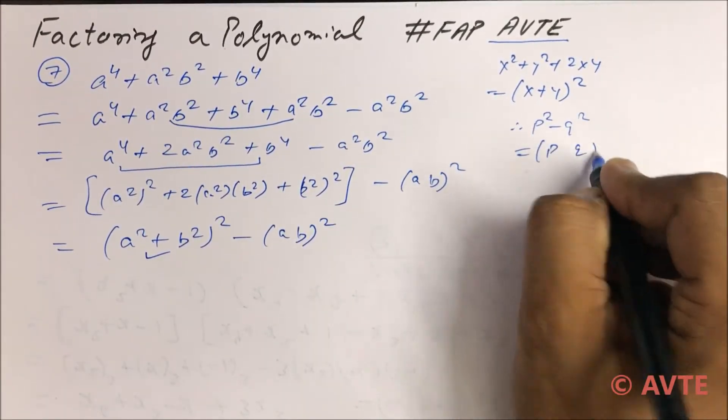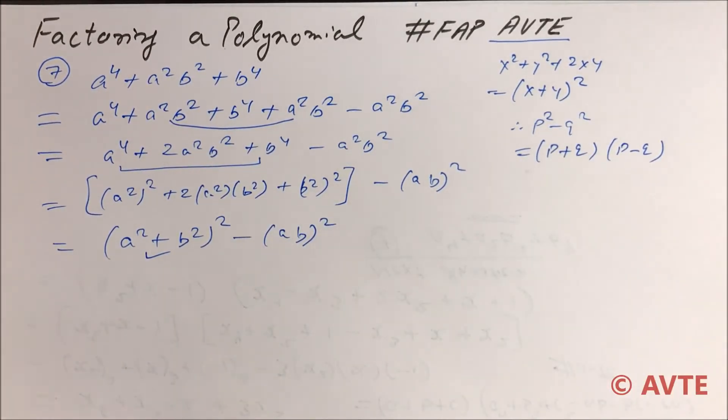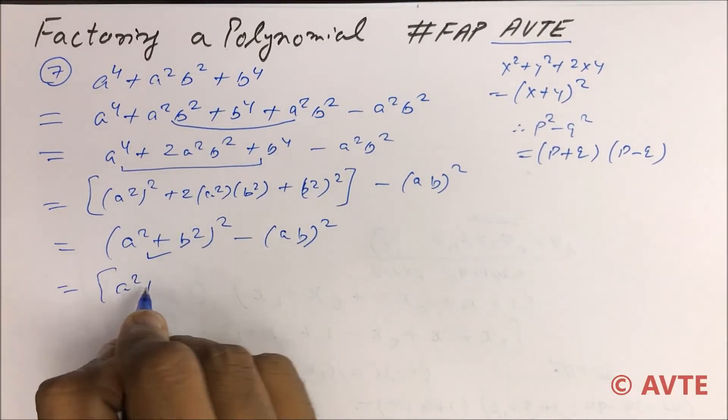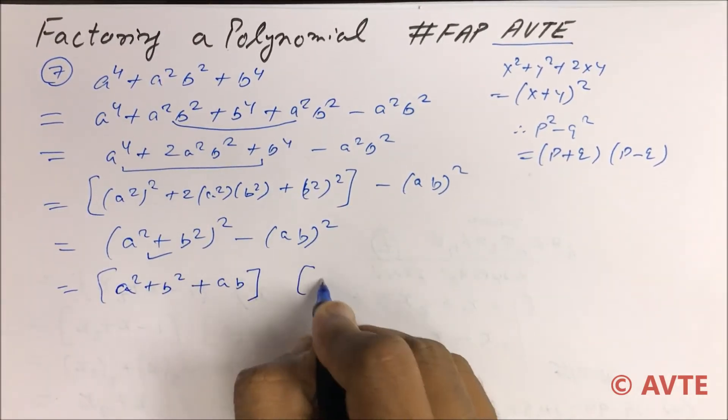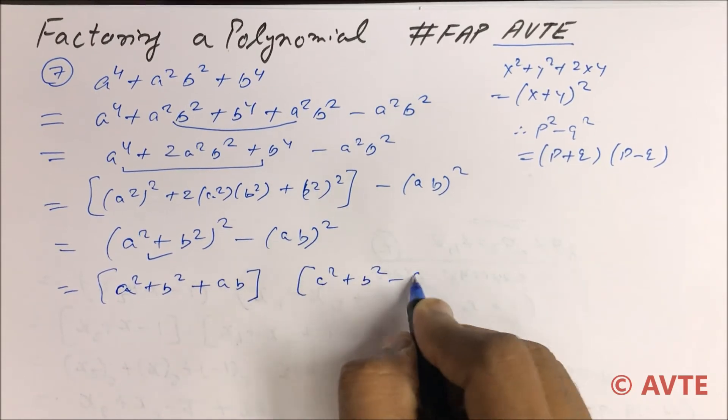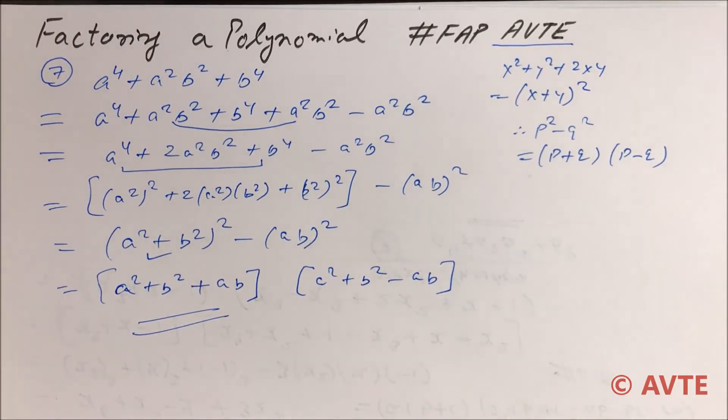Now there's a formation of P square minus Q square, that is PQ, PQ - this is plus and this is minus. So this is a square plus b square, and it's a monomial term, so you directly plus ab. And this is a square plus b square minus ab.